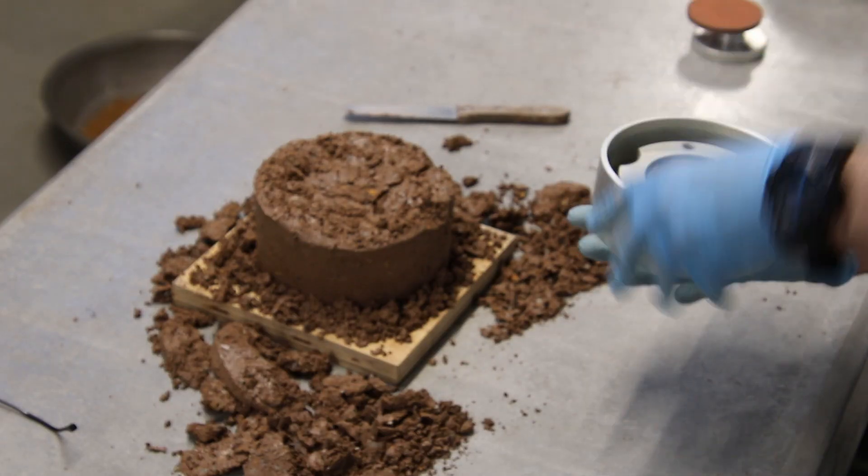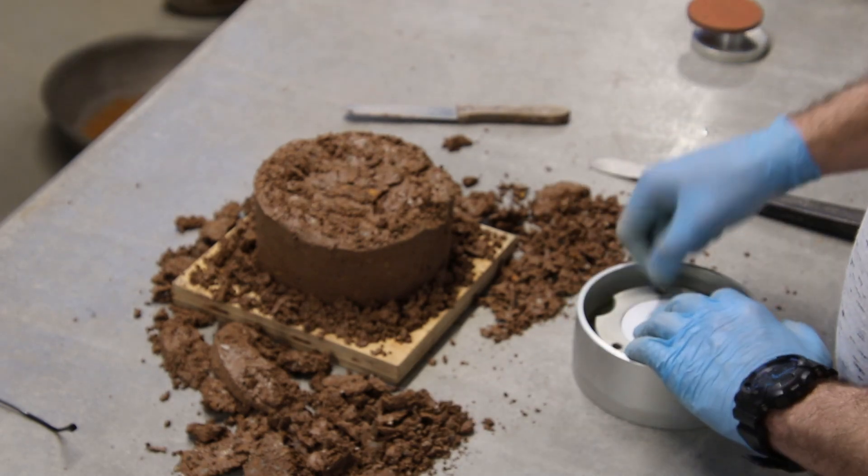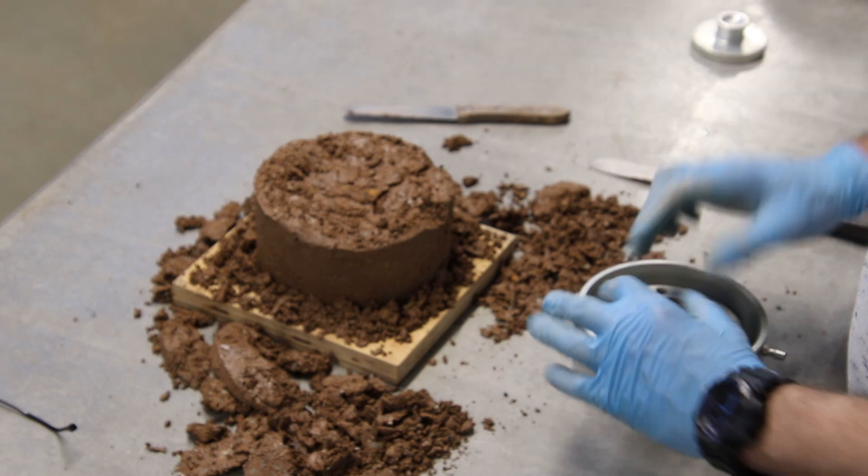Place the lower porous disk into the odometer cell assembly if not already present. Place the number 54 filter paper on the lower porous disk. Please do not forget this filter paper.